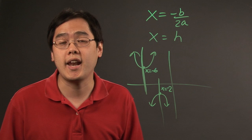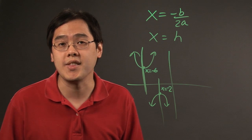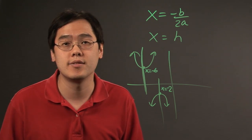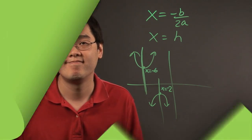So the bottom line is if your vertex of the parabola is going to be located on the negative x-axis, the axis of symmetry can be negative. I'm Jimmy Chang, and that answers the question, can the axis of symmetry be negative?